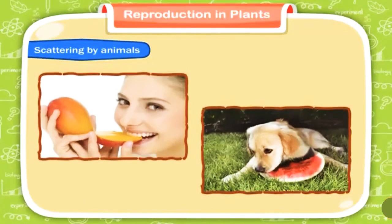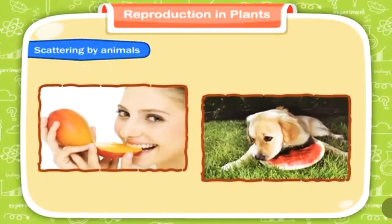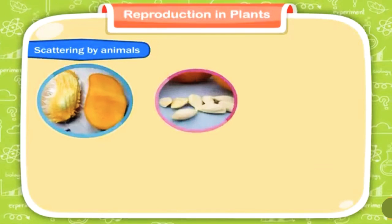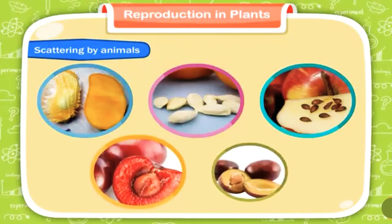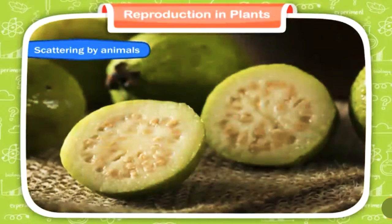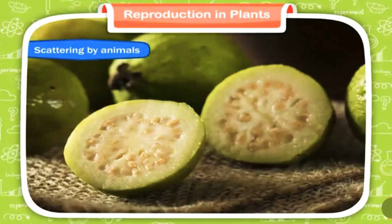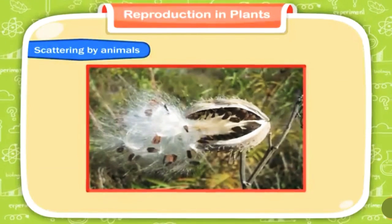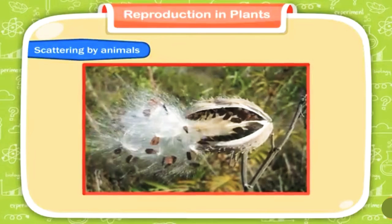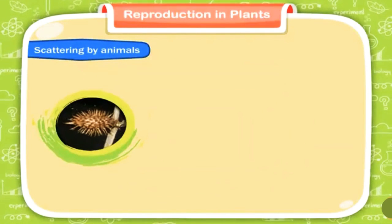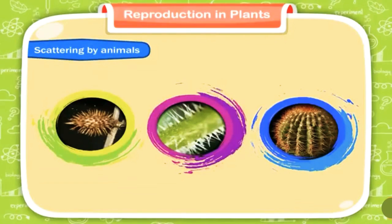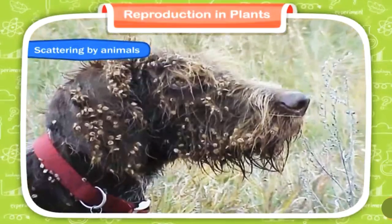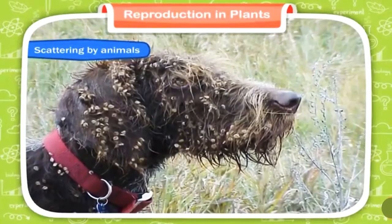Scattering by animals. Humans and animals eat fruits that contain seeds. We throw away the seeds after eating fruits like mangoes, oranges, apples, cherries, and plums. The small hard seeds of guava etc. are thrown out of our bodies with waste. All such seeds are carried far away from the parent plants. Seeds of many plants have stiff hair, hooks, or spines. These seeds stick to our clothes and the fur or skin of animals and are carried far away.